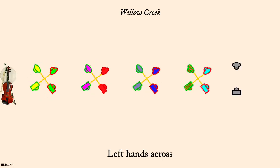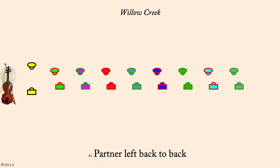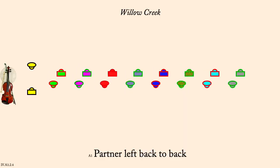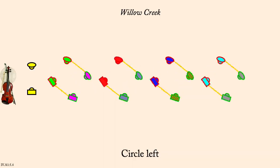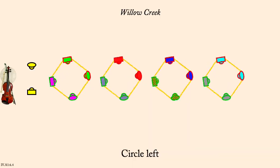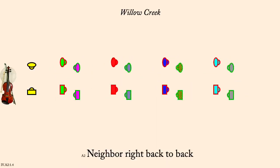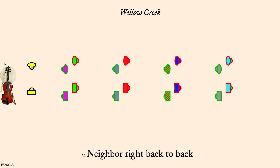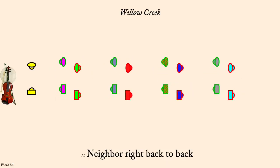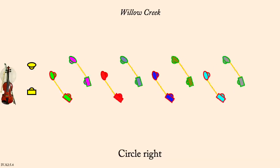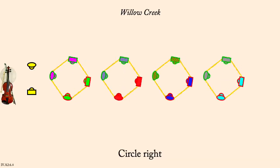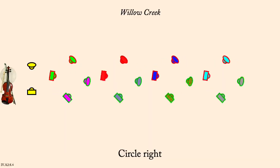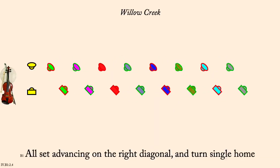Partner left back to back. Circle left. Neighbor right back to back. Circle right. Set advancing on right diagonal and turn single back.